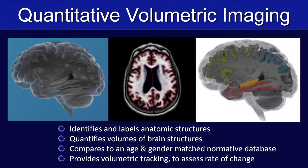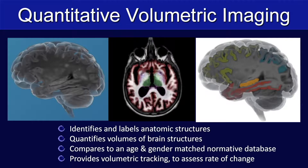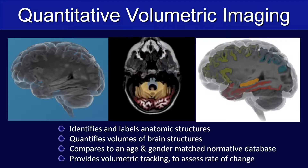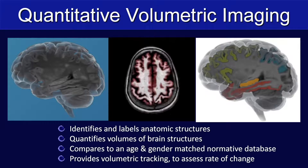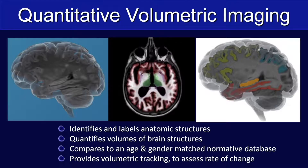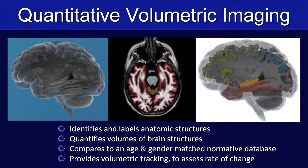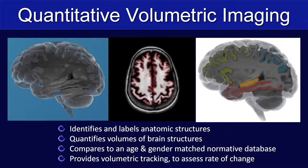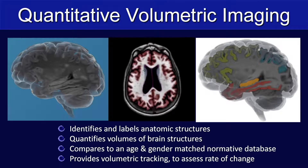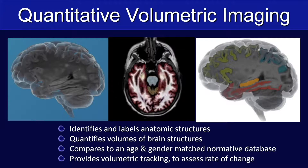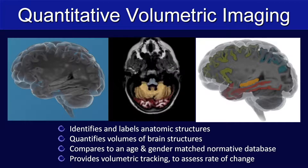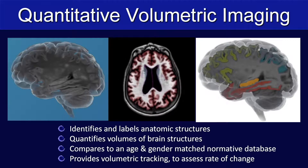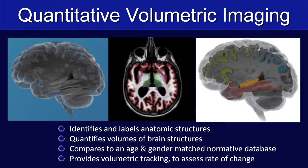Quantitative volumetric imaging is a post-processing tool that identifies and labels anatomic structures, then quantifies the volume of those brain structures, and compares that to a large age and gender matched normative database. This allows for volumetric tracking to assess for rate of change over time.